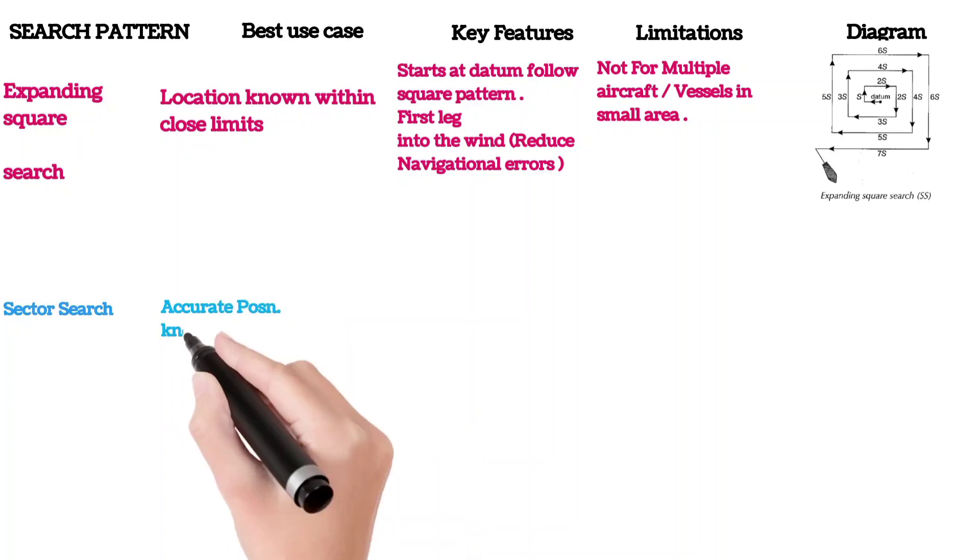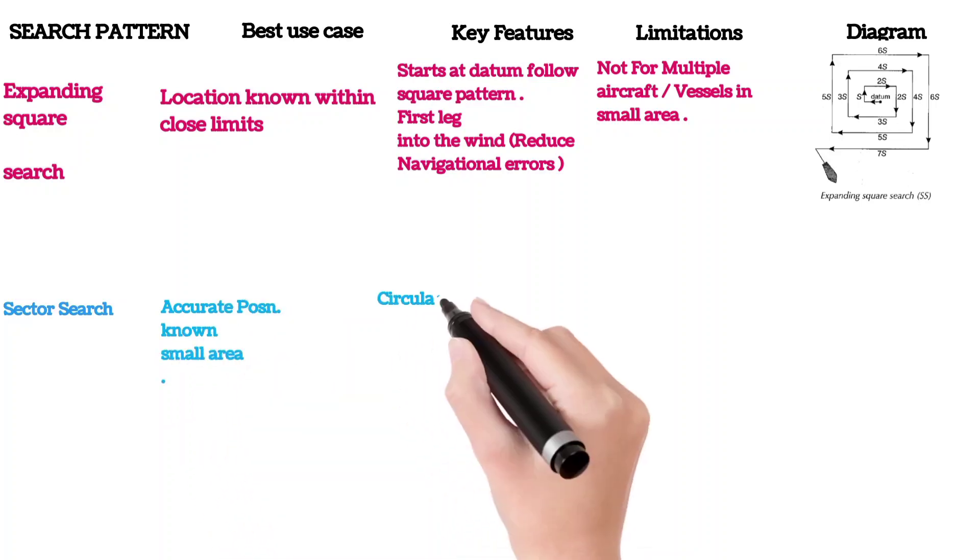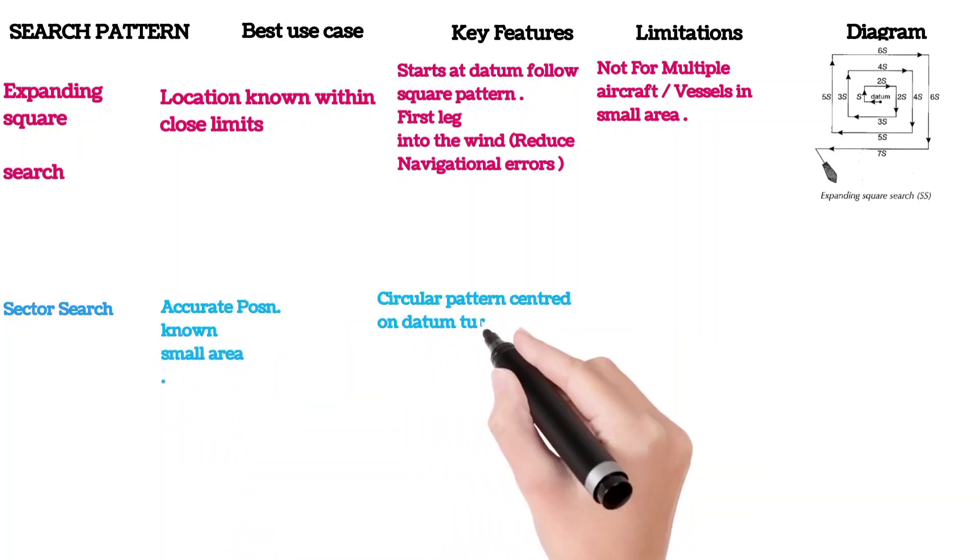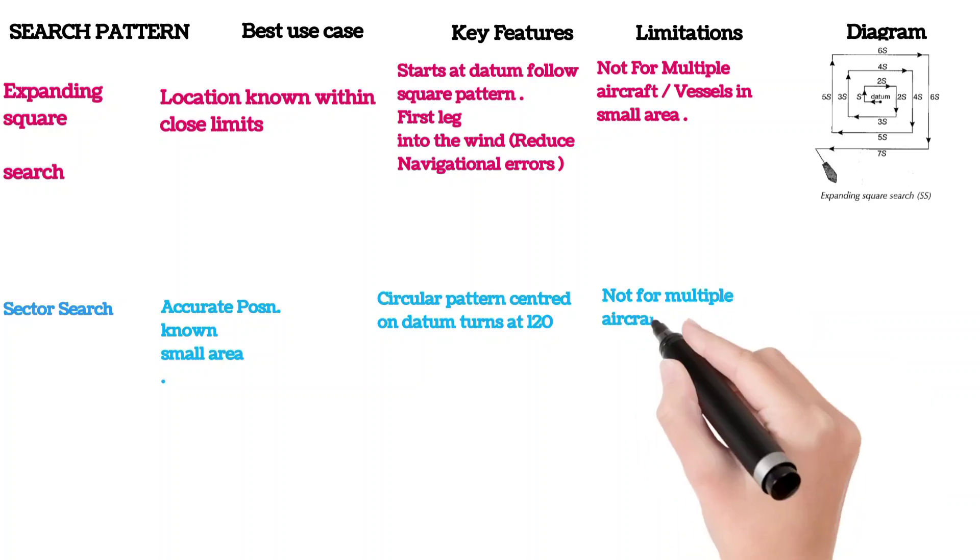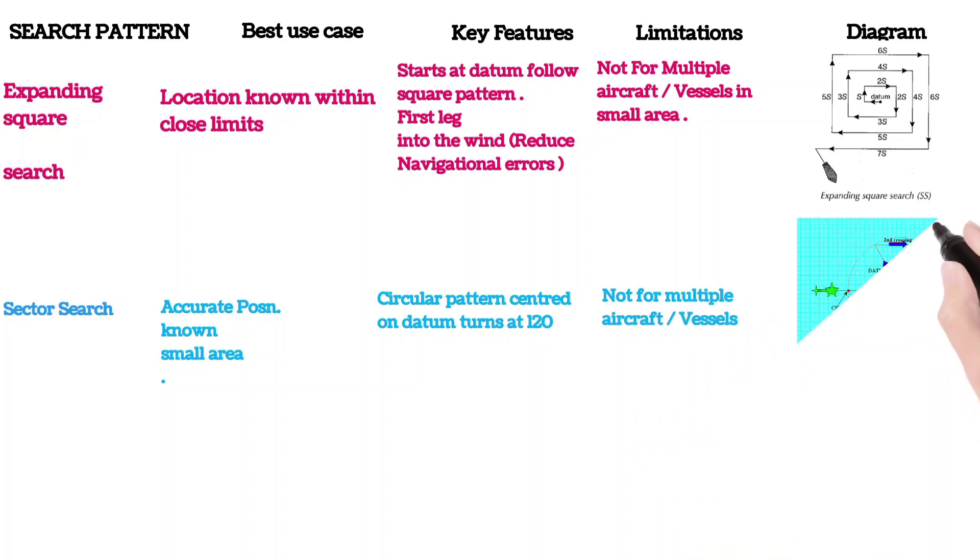Then we have sector search. Accurate position is known for small area. The circular pattern is centered on datum, turns at 120 degrees. Not for multiple aircraft and vessels. Diagram is shown here.